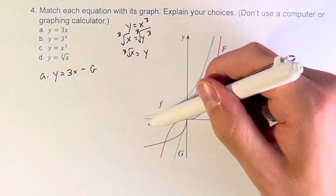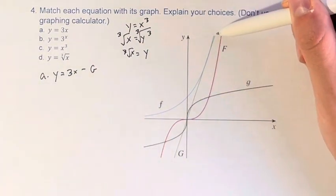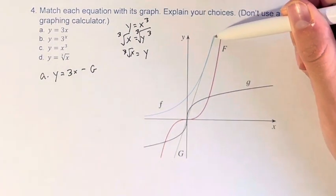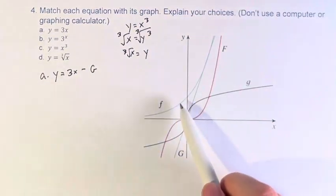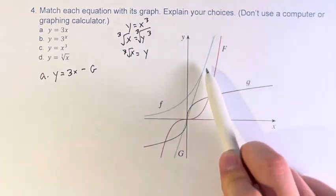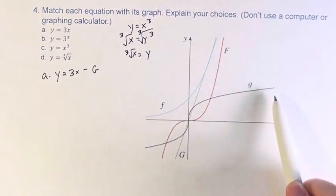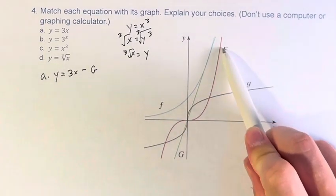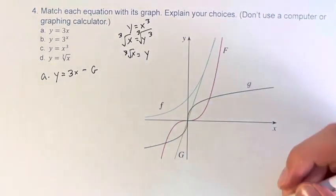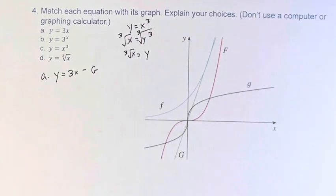Compare them to this blue f. This function has a different shape, right? It's just one smooth curve versus these sort of have a bend in them. Therefore we know capital F and lowercase g are inverses of each other.